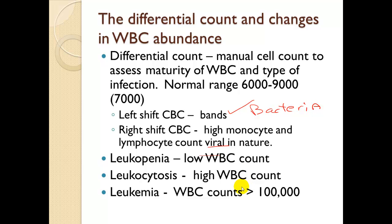Leukopenia is a low white blood cell count. Leukocytosis is a high white blood cell count. Leukemia is a white blood cell count greater than 100,000. However, leukemia cells aren't very effective — they die off quickly, causing a spike in white blood cells that clogs things up, and then the count may drop as low as 2 the next day.